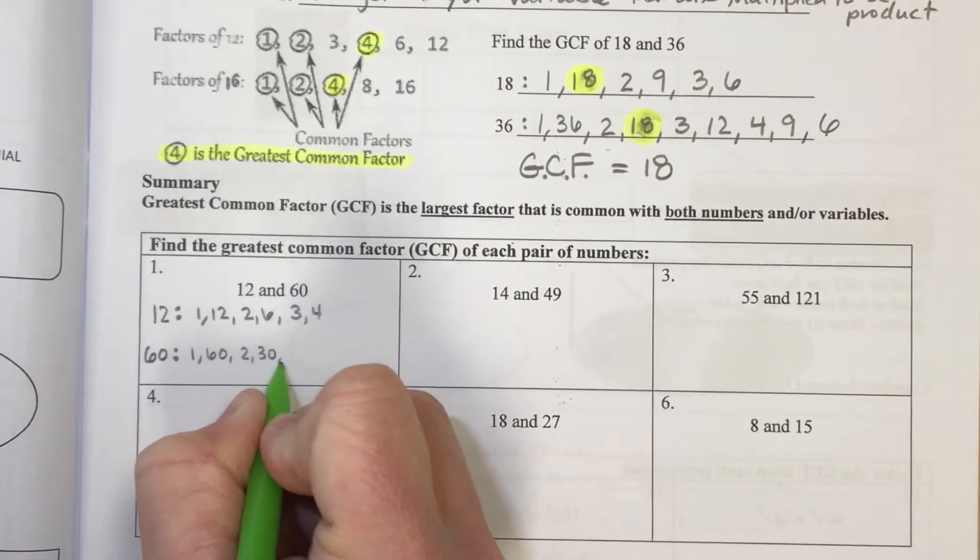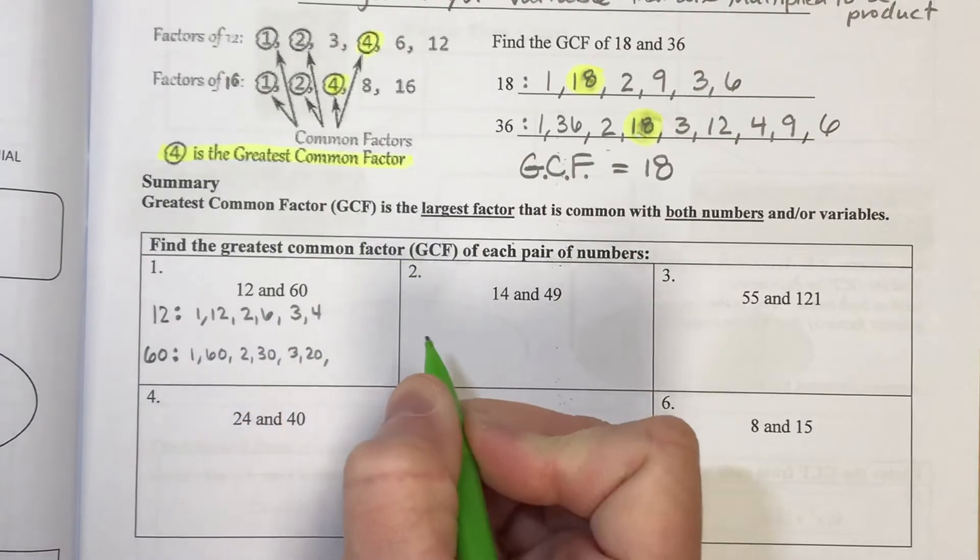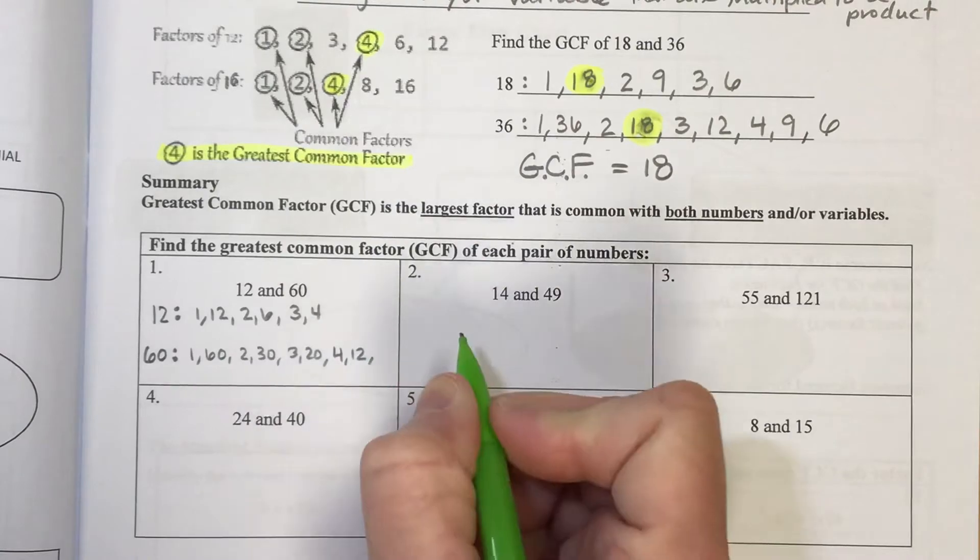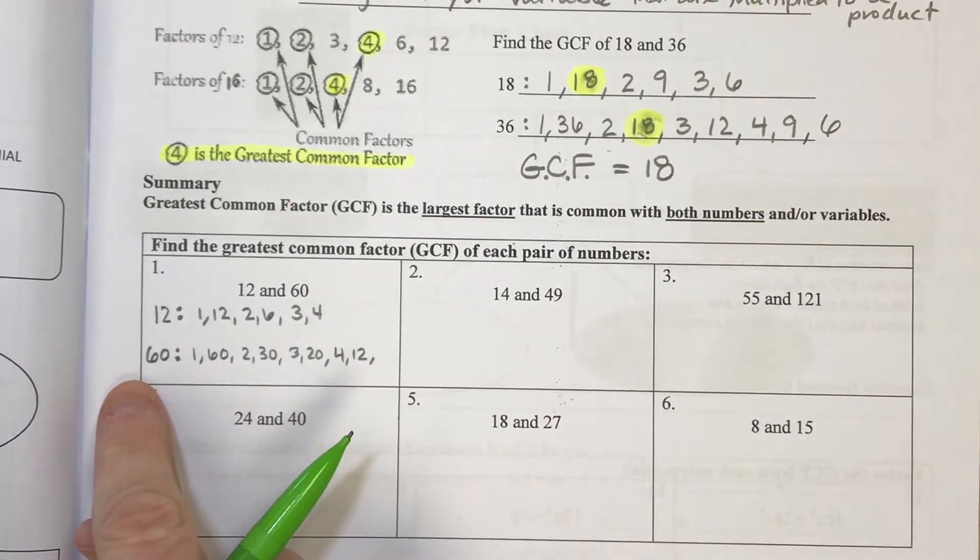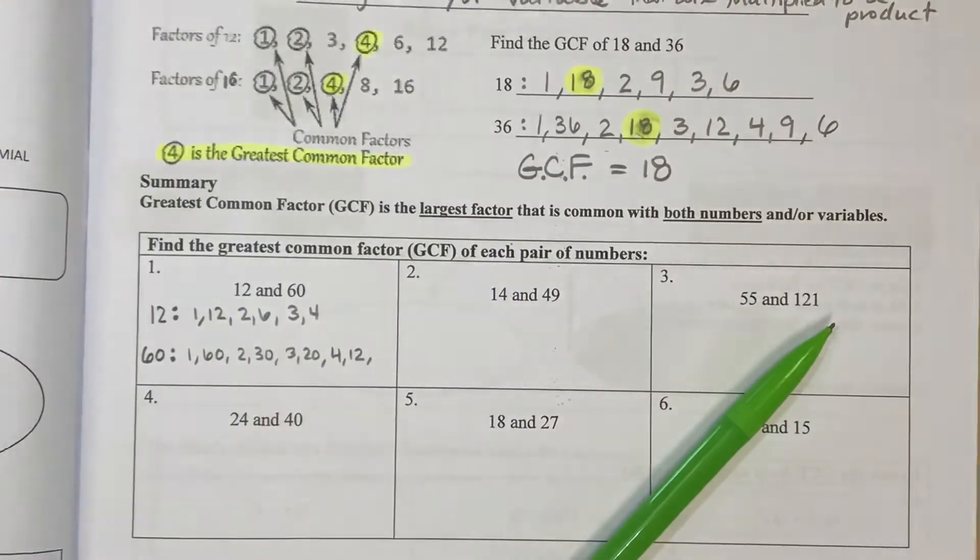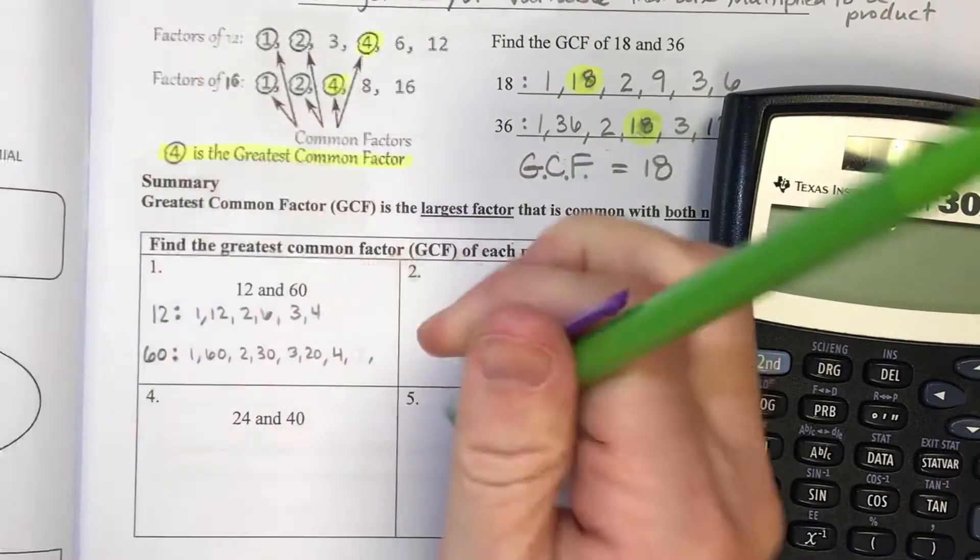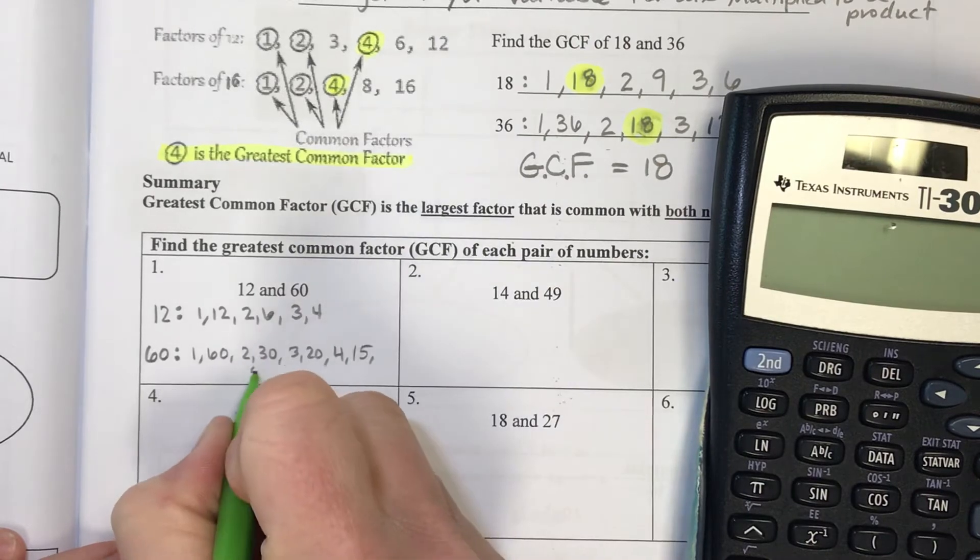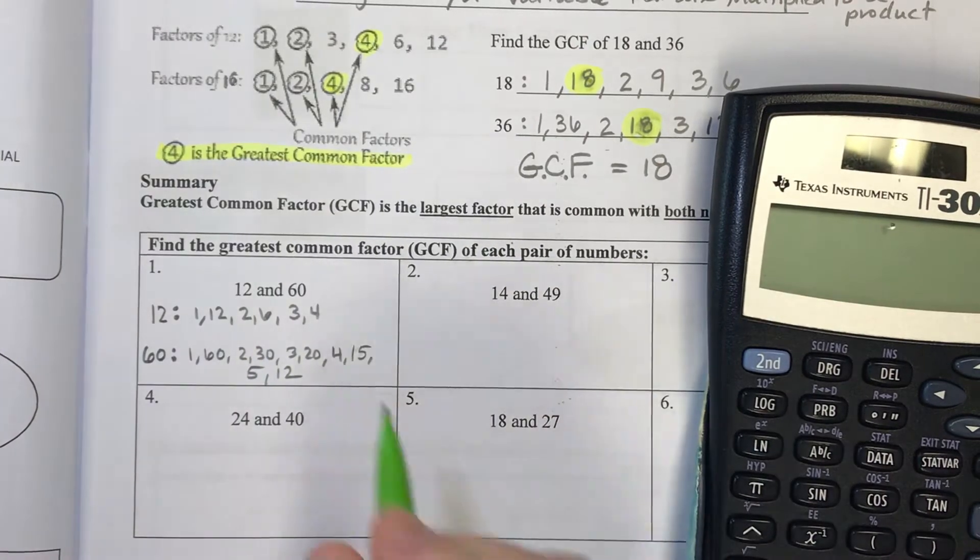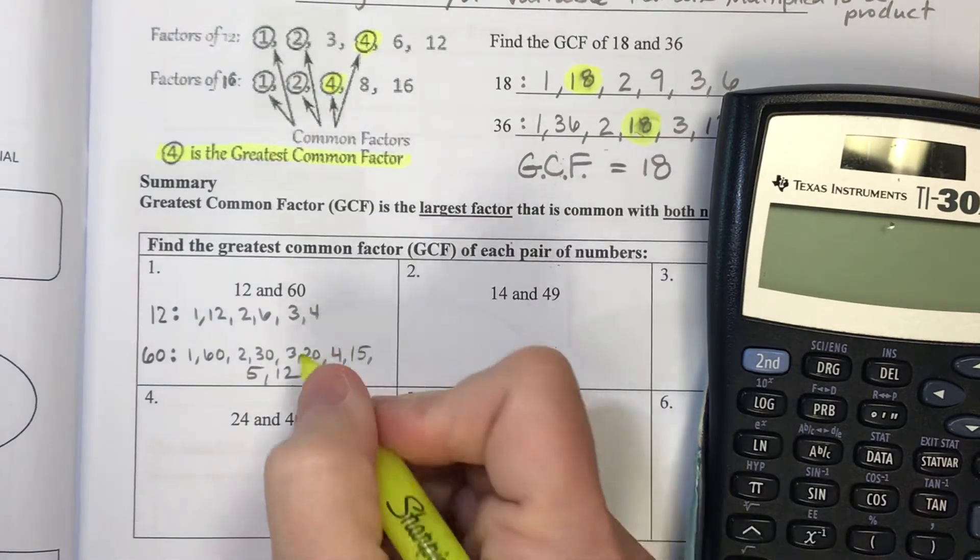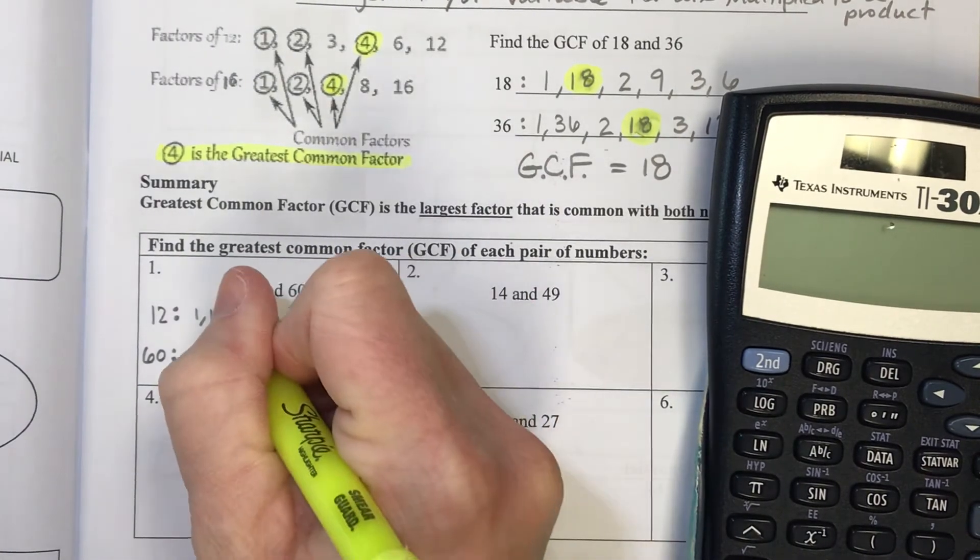Numbers that multiply to make 60 would be 1 and 60, 2 and 30, 3 and 20. Let's see, 4 and 15. It's not 4 and 12. 4 and 15 and 5 and 12. I think that's it. And then the biggest number that both of these have in common would be the number 12.